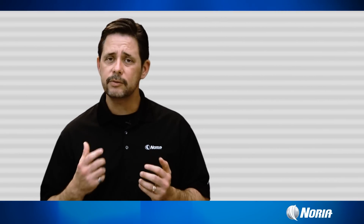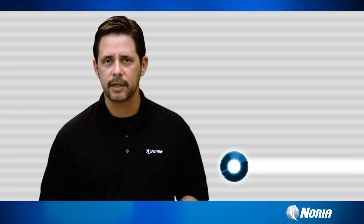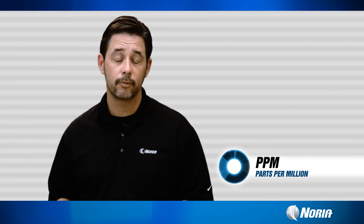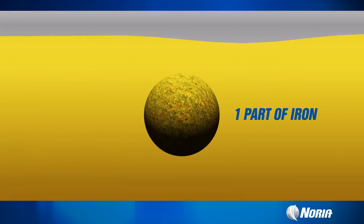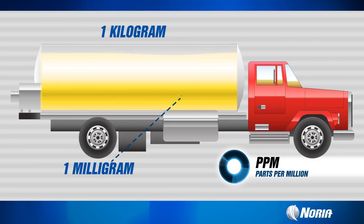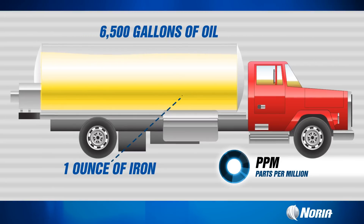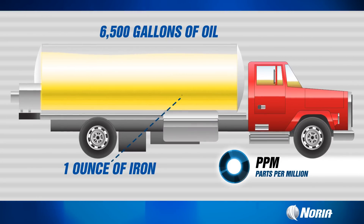What can we expect to see with elemental analysis? Well, this is where we get our parts per million values. The unit of measure is parts per million. What is a parts per million? It's basically one part of iron in a million parts of oil, or one milligram per kilogram, or one ounce of iron in 6,500 gallons of oil. That equates to one part per million.